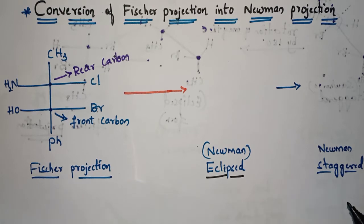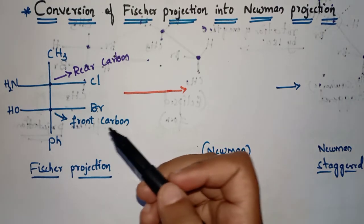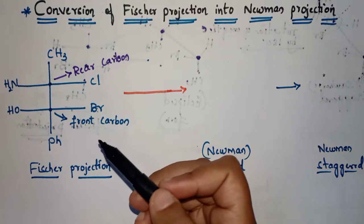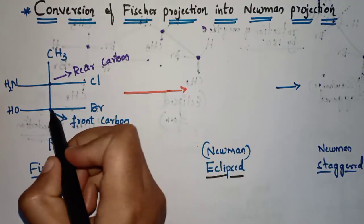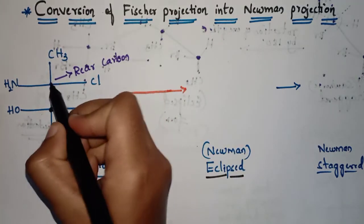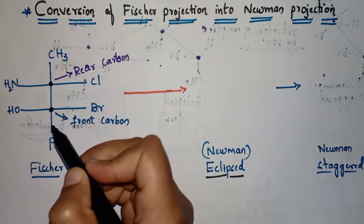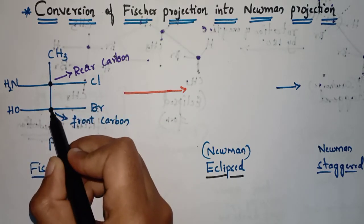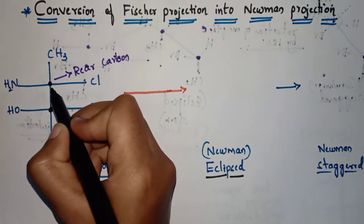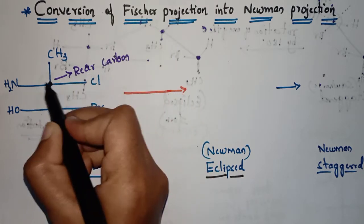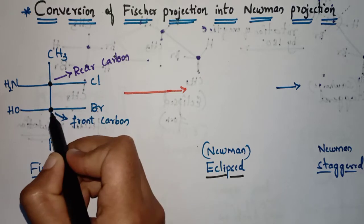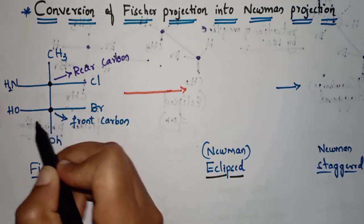We should keep in mind that Fisher projection is itself an eclipsed form, so it is converted into Newman eclipsed first, then into Newman staggered. The staggered form is the more stable form. In this example, there is a front carbon and a rear carbon. For the rear carbon and front carbon, these are the respective groups which are attached.